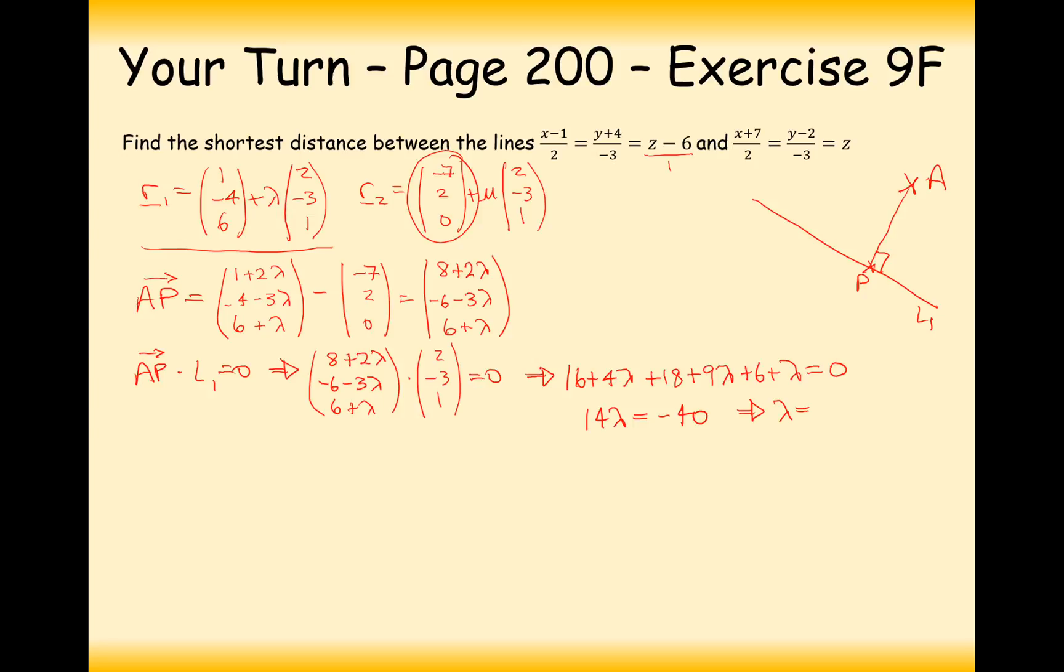So rearranging this, I'll have 14 lambdas, and on the other side I'm going to have minus 6 over to the other side, minus the 18 over to the other side, and minus the 16 over to the other side, so I'll have minus 40. So therefore in this thing here, lambda is going to equal, divide by 14, minus 20 over 7.